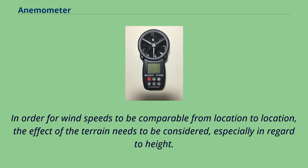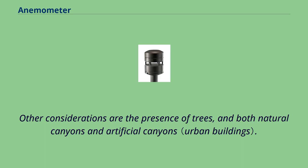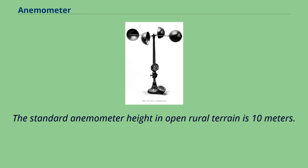In order for wind speeds to be comparable from location to location, the effect of the terrain needs to be considered, especially in regard to height. Other considerations are the presence of trees, and both natural canyons and artificial canyons. The standard anemometer height in open rural terrain is 10 meters.